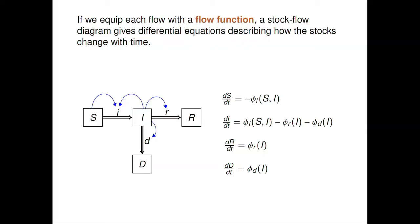What does D stand for? Dead. So people don't go away — they just go into a little tomb in this model. You can have conservation of people even in models where people die. There's a certain rate at which infected people die, which in this simple model is just some arbitrary function phi_d of i.